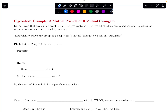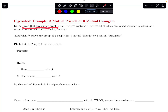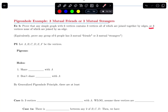In this video, we are going to do a pigeonhole example that involves three mutual friends or three mutual strangers. The example says: prove that any simple graph with six vertices contains three vertices all of which are joined together by edges, or three vertices none of which are joined by an edge.